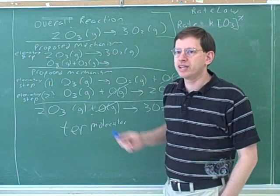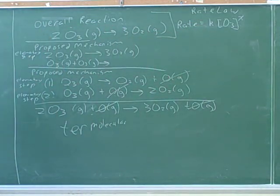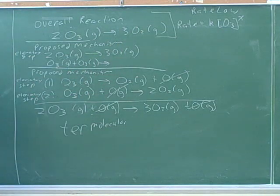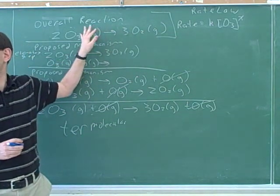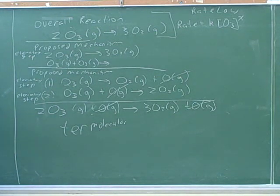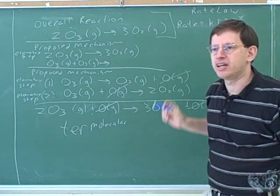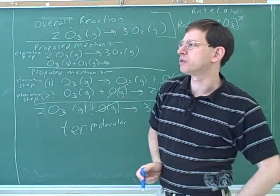This overall reaction has both a forward rate and a reverse rate, which complicates things. In this chapter, we generally want to simplify things and focus on one direction by looking at the initial rate. Initially there are only starting materials and no products, which means only the forward reaction is happening — if there are no products, how can products be turning into starting materials? So focusing on the initial point lets us focus just on the forward rate.